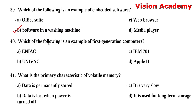Question 40: Which of the following is an example of first generation computers? Option A: ENIAC. Option B: Univac. Option C: IBM 701. Option D: Apple II. The right answer is Option A, ENIAC.